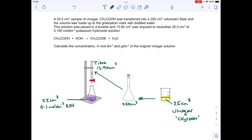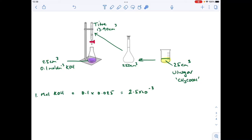The first thing we can do is calculate the moles of potassium hydroxide, because we know the concentration and volume. So concentration 0.1, volume in decimeters cubed 0.025, so there are 2.5 times 10 to the minus 3 moles of potassium hydroxide involved in this titration.